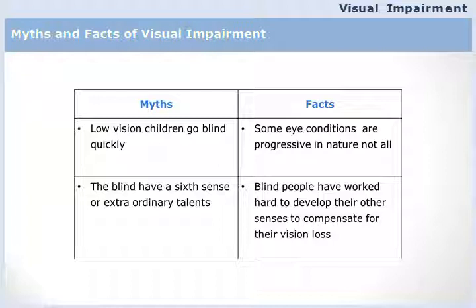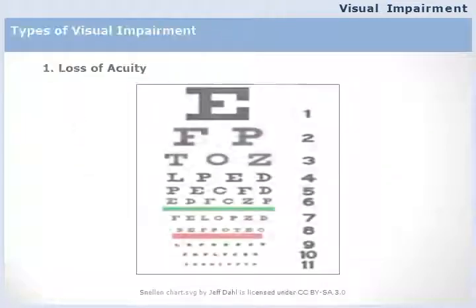A very common misconception is that visually impaired people have a sixth sense — that they can hear better and remember better. This is absolutely not true. They work very hard to compensate for their visual loss by focusing on other senses. It is not that they are born with some additional extraordinary power or sixth sense.